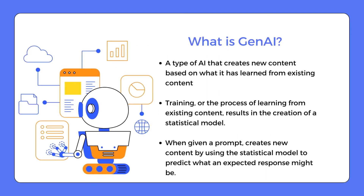Now let's provide our formal definition. What is Generative AI? Generative AI is a type of artificial intelligence that creates new content based on what it has learned from existing content. The process of learning from existing content is called training, and results in the creation of a statistical model. When given a prompt, AI uses the model to predict what an expected response might be, and this generates new content.